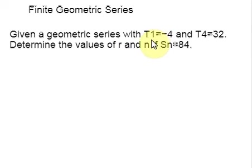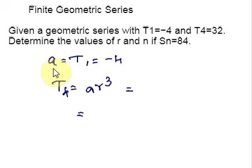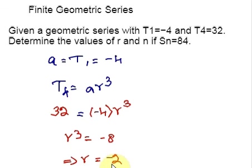We are given T1 and T4. A is the first term, so T1 gives us A. For T4, we use the formula: T4 = A times R cubed. We have the value for A and the value for T4, so we plug those values into this equation and solve for R. Dividing both sides by negative 4 and taking the cubic root, we get R equals negative 2.